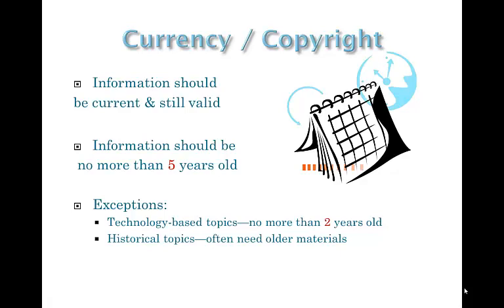Information you are citing in your research should be considered current and still valid, so the general guideline is that your sources should be no more than five years old. There are disciplines in which you shouldn't use anything more than two years old, such as technology. And there are topics which require you to use an older article to gain more information about how a situation developed, especially historical research topics. If you have resources that you feel are important to use but are more than five years old, make sure the information is still valid and check with your instructor.